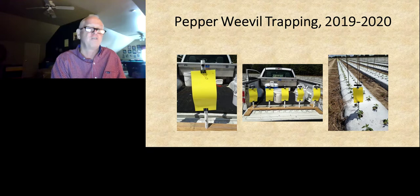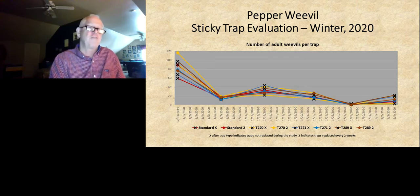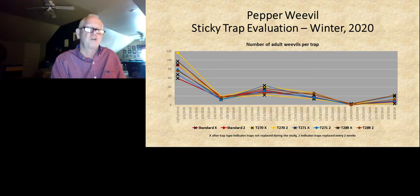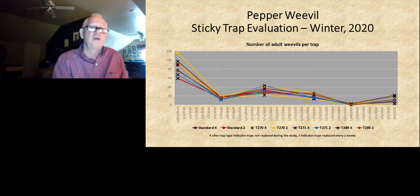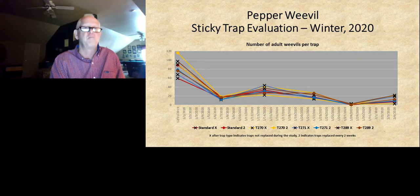We've also been looking at sticky cards to see if we can make them last longer. Looking at the graph, entries go from one week up to six weeks after being put out in the field, comparing no change versus changing every two weeks. You can see those sticky traps are easily lasting at least a month. When we use them in the field, we change them every two weeks to ensure good efficacy. But particularly in the winter, they're probably lasting at least a month as far as stickiness for catching weevils.